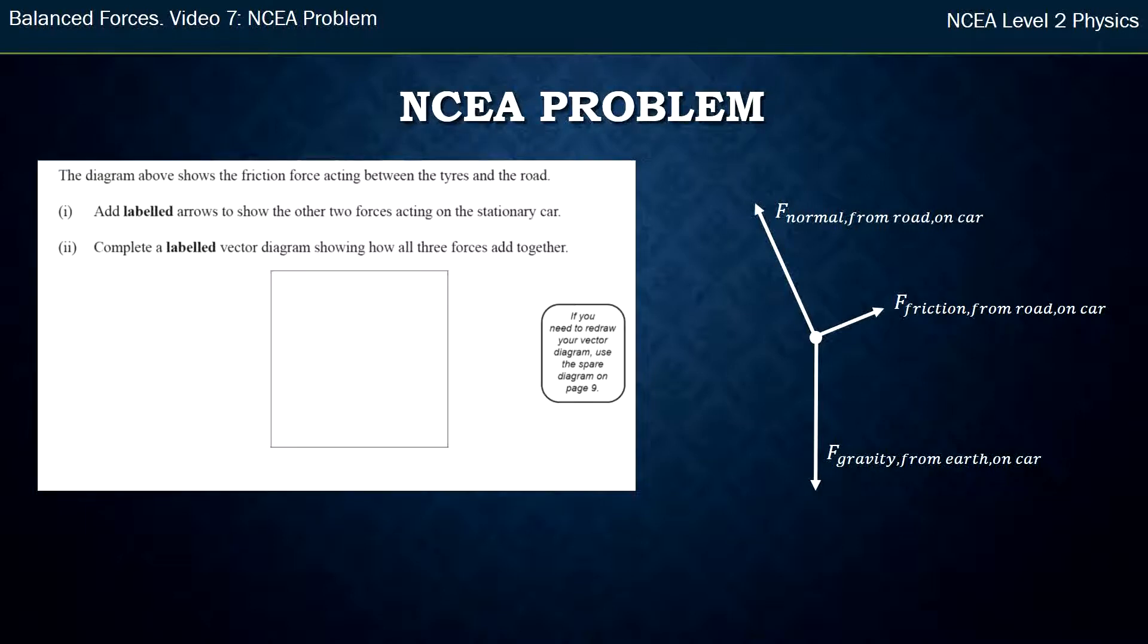And then it says a labelled vector diagram, so that's my vector addition diagram, and show how these three forces add together. So I take one of the forces and I add the next one head to tail. So I've got my normal force I'm going to add in next, and then my friction force last. With the vector addition diagram, don't get lazy, label them. Now you see my labels are a lot shorter than my original labels on my force diagram. That's okay because I've already got that there.